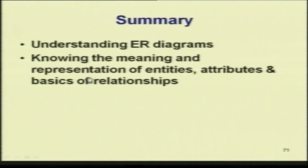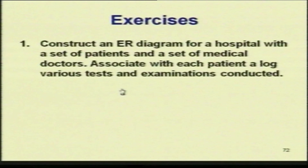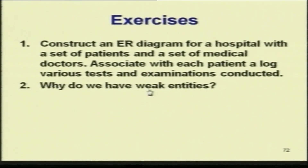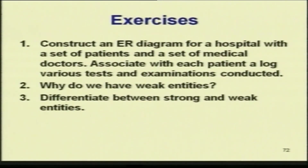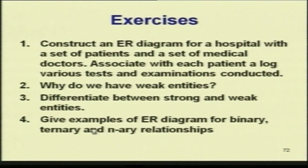In summary, we have looked at the basics of ER diagrams — we understand the meaning of entities, attributes, and some basics of relationships. An assignment: construct an ER model for a hospital with a set of patients and a set of medical doctors, associating with each patient a log of various tests and examinations conducted. Please try to do this and answer: why do we have weak entities? Also differentiate between strong and weak entities and give examples of ER diagrams with binary, ternary, and n-ary relationships. Thank you.